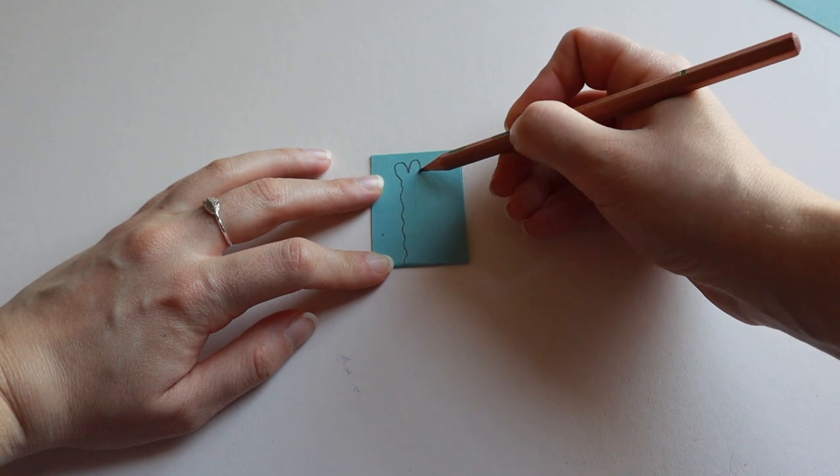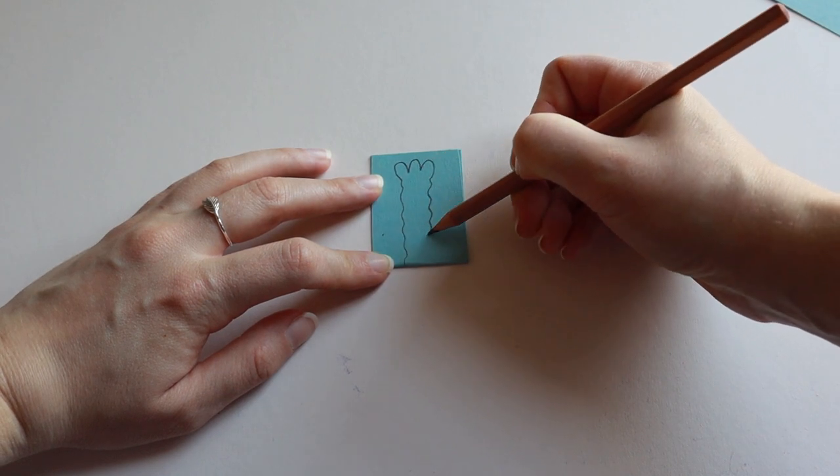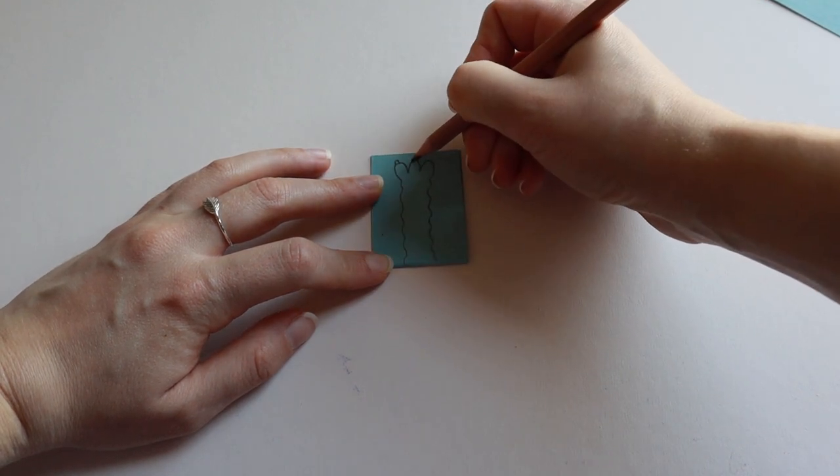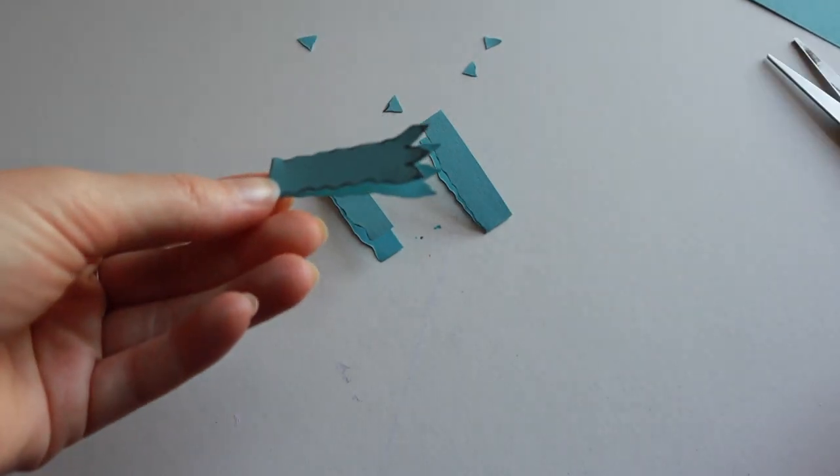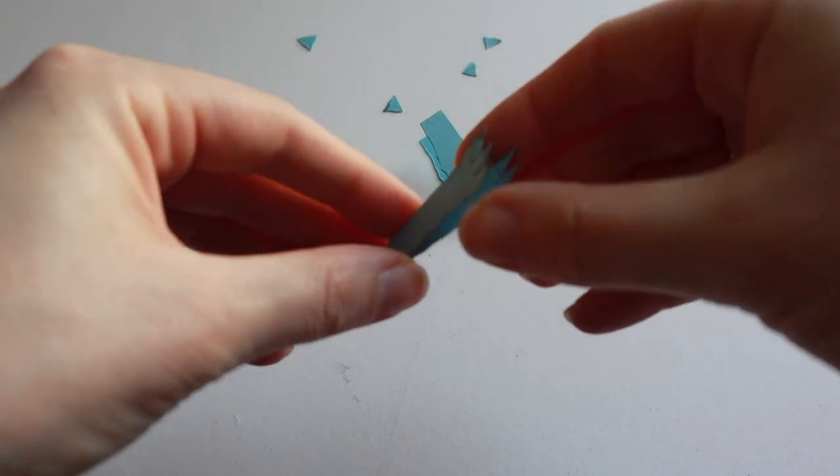I am making a bear, so it's going to be furry and have claws. Cut out your arm, but don't cut along the folded edge. You will end up with two arms attached together.